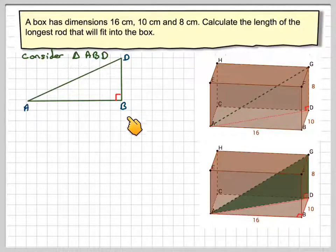OK, so we've got ABD. So there's the base one here. So this is 16, and this is 10. And then we can find this length here by using Pythagoras' theorem.